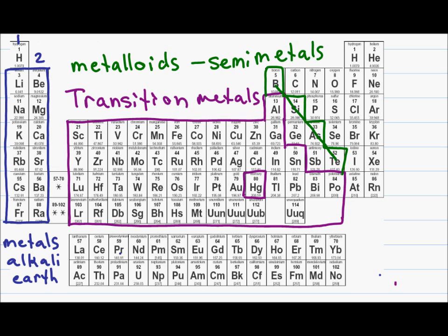To the right, we have this staircase looking group, which are known as the metalloids or semi-metals. And this is because they share some characteristics of the metal elements and some characteristics of the non-metals. To the right of the metalloids, we have the non-metals.